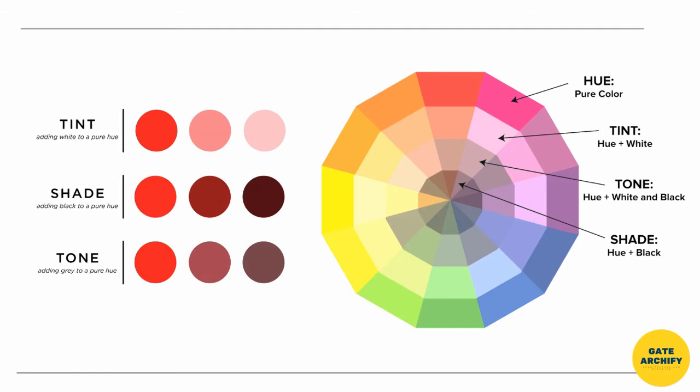Tint is created when we add white to a pure hue. Shade is when we add black to a pure hue. Tone is when we add gray to a pure hue. We'll understand this better in the Munsell color system.